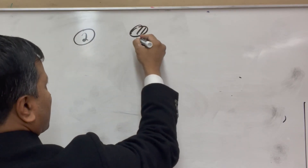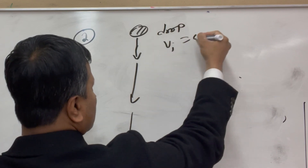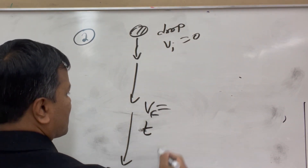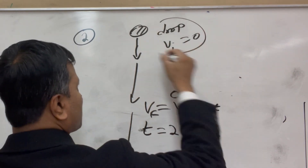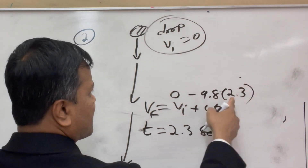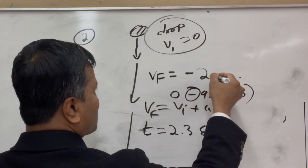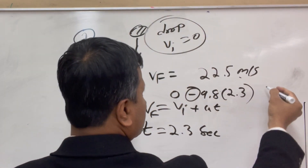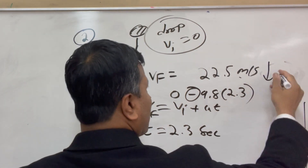Problem two has to do with dropping an object from above the ground. Drop means initial velocity is 0. Find the velocity of the object when time is 2.3 seconds. All you have to do is V_final = V_initial + at. V_initial is 0 because when you drop, initial velocity is 0. So it's 0 plus (−9.8)(2.3). Since 10 times 2 is 20, it's a little more than 20. V_final is −22.5 m/s. Writing −22 m/s, or 22.5 m/s downward, is also fine.